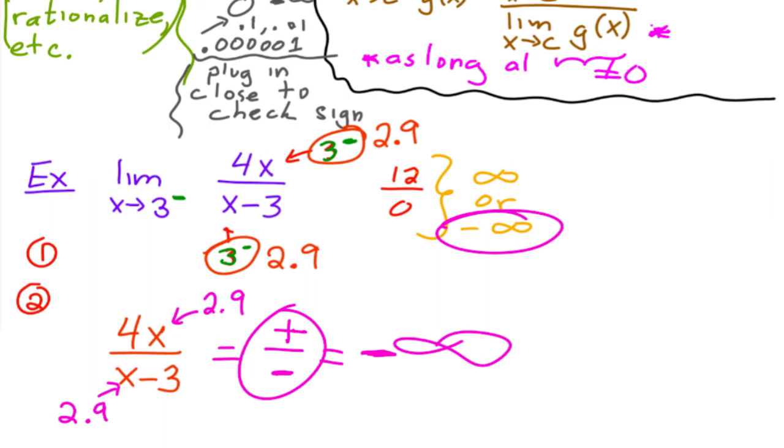But you don't do one, you don't do this one before you do this one. So you always have to check by plugging it in first. Once you know that it's one of these two cases, then you can plug in a number that's close to tell you that it's going to negative infinity in this case.